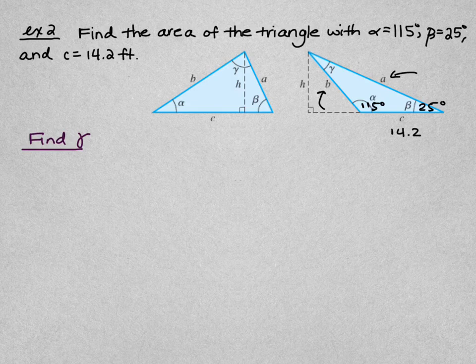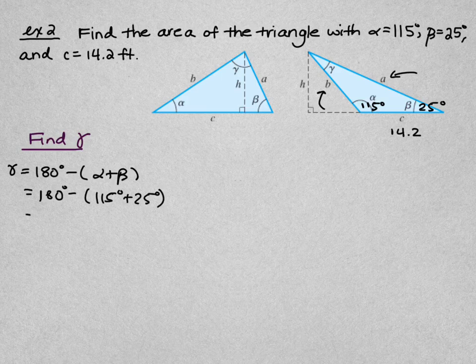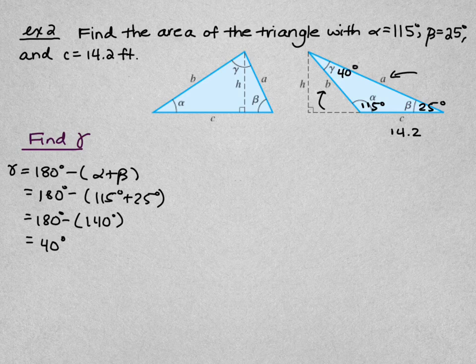We find gamma because it's the angle opposite side c. Gamma equals 180° minus the sum of alpha and beta, so gamma equals 180° minus (115° plus 25°), which is 180° minus 140°, giving us gamma equals 40°.